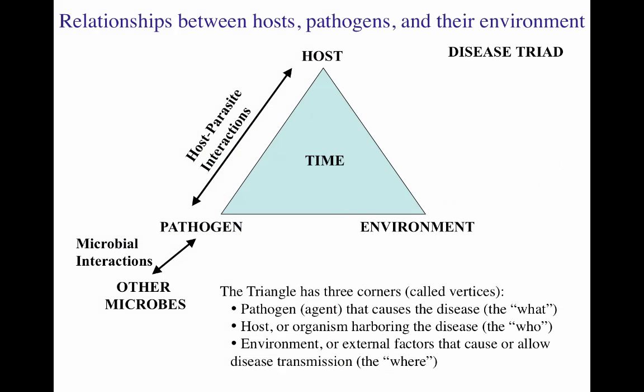Let's think about disease as a relationship between the pathogen or agent, us being the host — or any animal that could be the host — and then the environment. That is what we call the disease triad. The host is on one side, the environment on the other, and the pathogen in the middle, possibly interacting with other microbes through quorum sensing and competition. Each point is called a vertex, and they all have different influences on the outcome of disease.